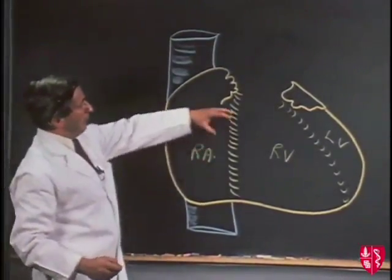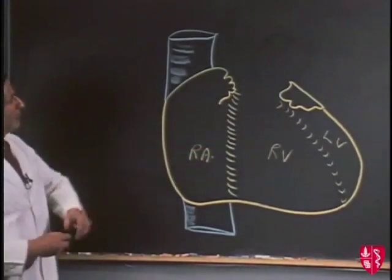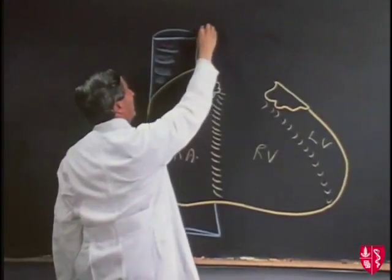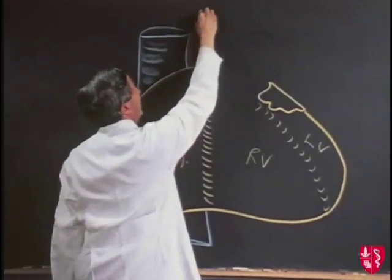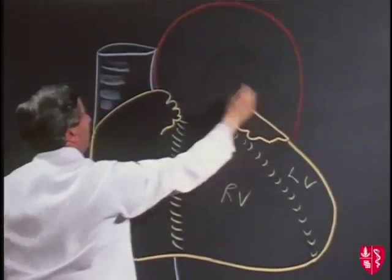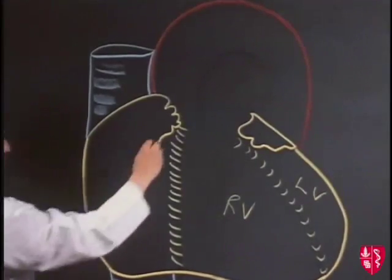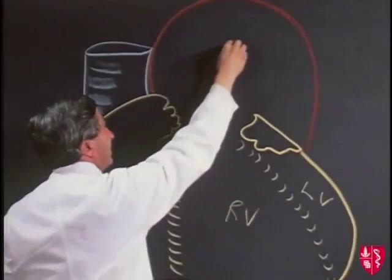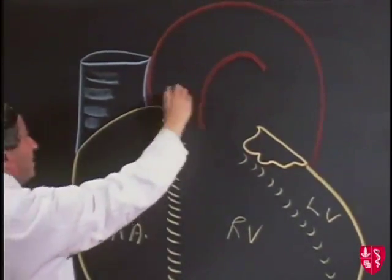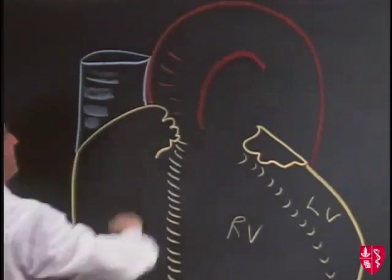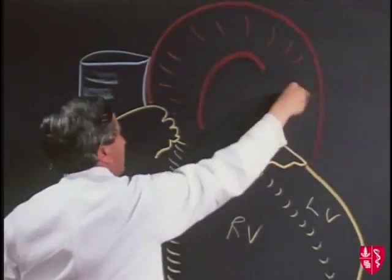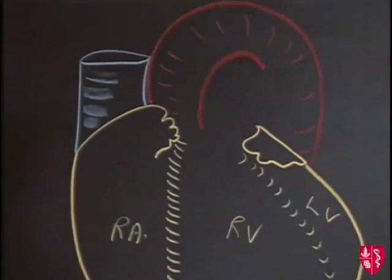Coming out of the upper end of the left ventricle, we have the ascending aorta. And the ascending aorta is going to come up and become continuous with the arch of the aorta, and pass over in that direction, coming down and becoming continuous with the descending thoracic aorta. And here's the other margin, which I'll just pass up to that sort of position, so that this indicates the position of the ascending aorta becoming continuous with the arch of the aorta, which in turn becomes continuous with the descending thoracic aorta.